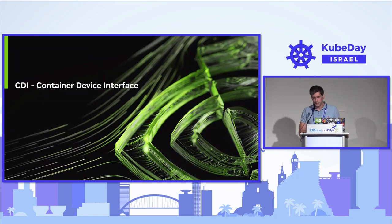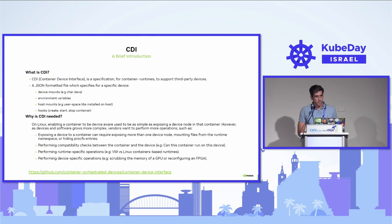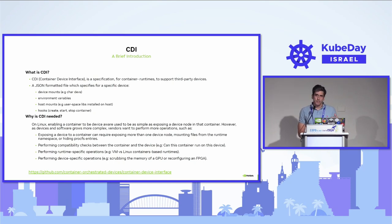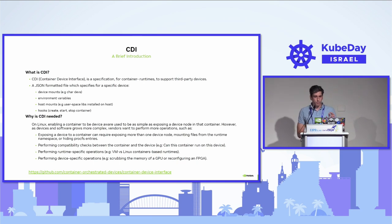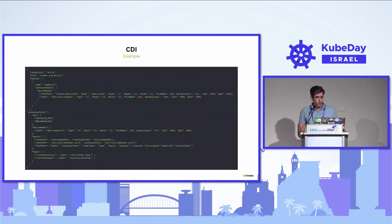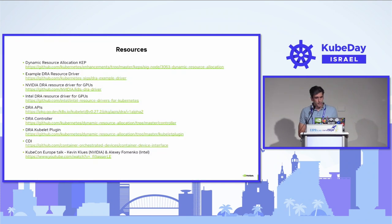CDI stands for Container Device Interface. It's a JSON-formatted specification describing how a device should be exposed to a container. It contains information such as device nodes that need to be exposed, like char devices, environment variables, host mounts, and hooks. It's a standardized way to expose devices to containers, consumed by container runtimes like ContainerD and CRI-O. There are links to resources mentioned throughout this presentation for reference. With that, we are done — thank you.